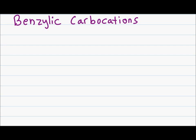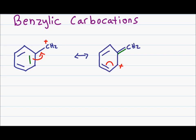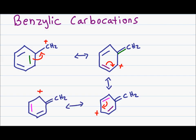A benzylic carbocation is another perfect example of a carbocation stabilized by a conjugated system. A benzene ring has six carbons with three pi bonds that constantly resonate inside the ring. A benzylic group has a carbon coming out of this ring — in this case a CH2 with a positive charge. The pi bonds within the benzene ring can come out to help stabilize this carbocation, giving the first resonance structure. Moving another pi bond within the benzene ring gives a second resonance structure, and moving the third pi bond gives yet another. From the fourth resonance structure, the double bond outside the ring can return towards the carbocation, reforming the benzene ring.